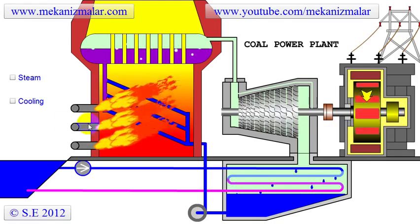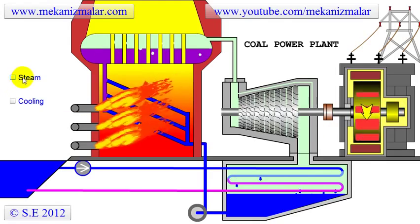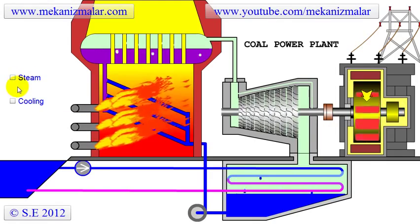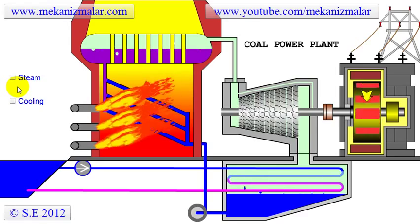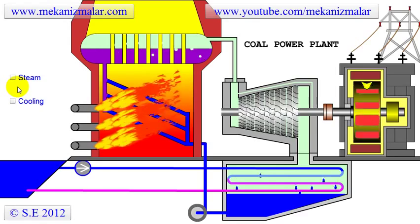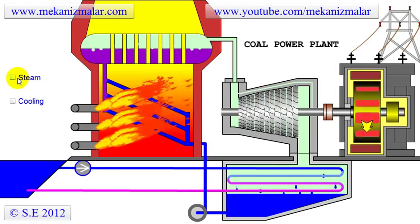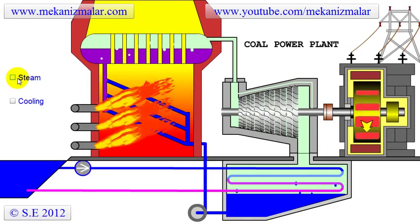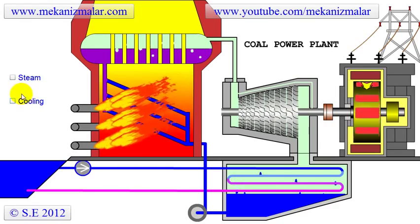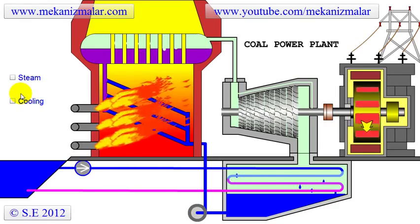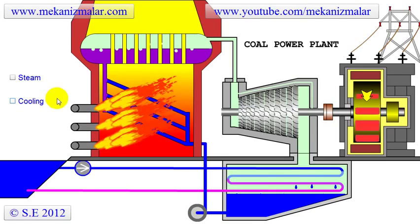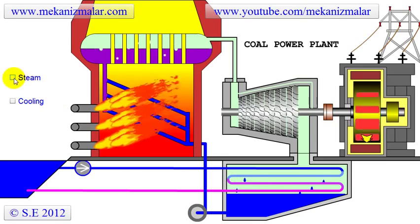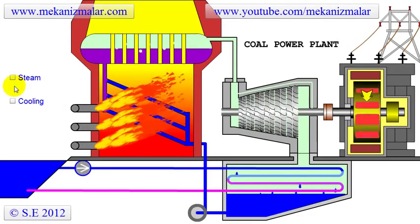There are two major water cycles in any power plant — whether it is a coal, nuclear, or gas power plant. The first is the closed-loop power-producing water cycle, which we call the steam cycle. The second is the open-loop cooling water cycle. No thermal power plant can operate without these two cycles.